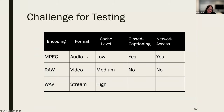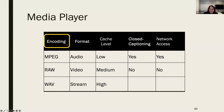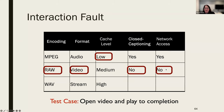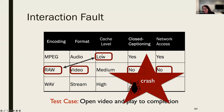The challenge for testing is how to handle this configurability. Consider a media player with parameters for encoding, format, cache, and closed captioning. If I run a test case — open video, play to completion — with raw encoding, video format, high cache, closed captioning on, no network access — it passes. But if I run the exact same test case and switch the cache from high to low, the system crashes. This is very common in configurability. Often different parts of the system were developed independently — the encoding team may have assumed a high cache level and never thought to test that combination.